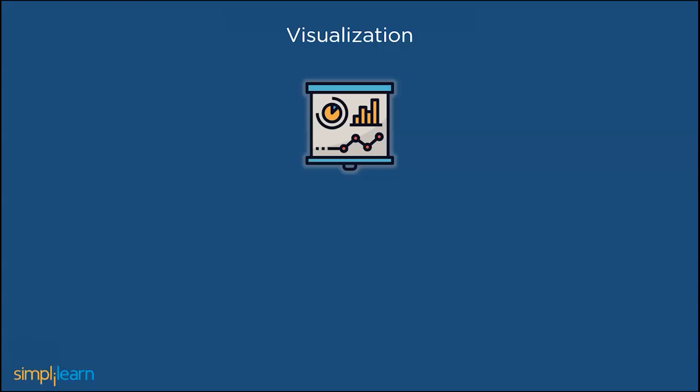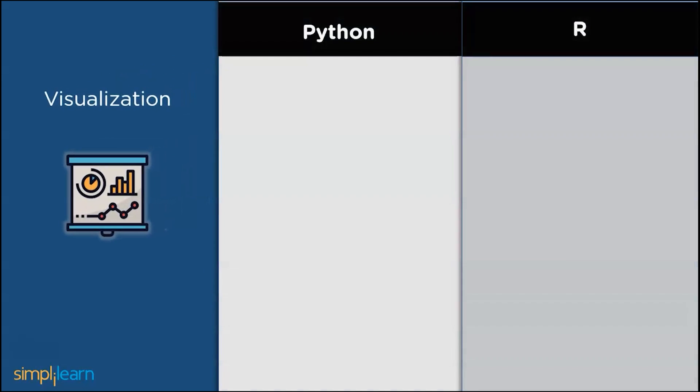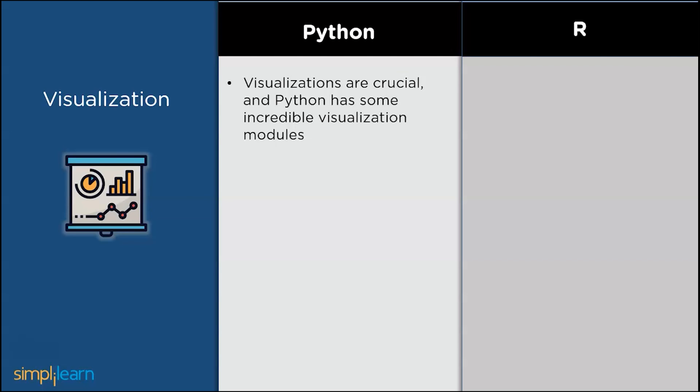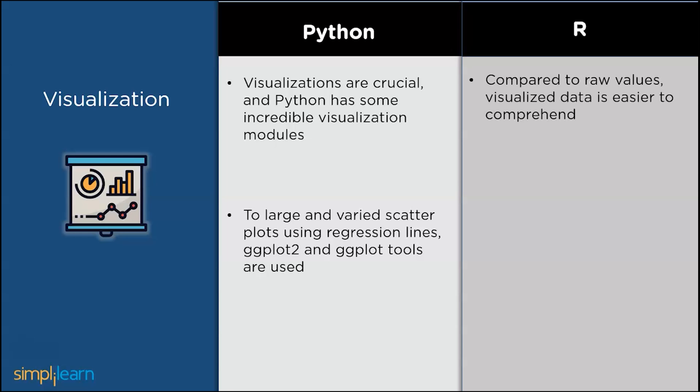Coming to data visualization and data collection in Python. When selecting data analysis tools, visualization is crucial and Python has some incredible visualization tools. In Python, for large and varied scatter plots using regression lines, we can use ggplot2 tools. Compared to raw values, visualized data is easier to comprehend. Therefore, R has many packages that offer sophisticated graphics features. In R we can use tools like Matplotlib, Seaborn, etc.